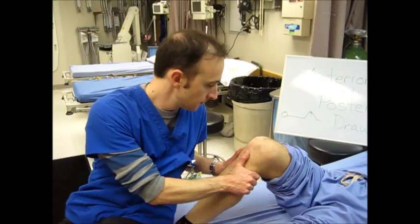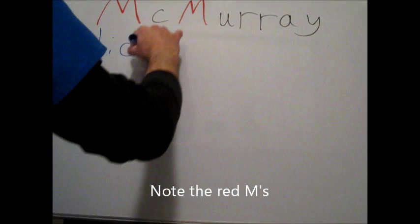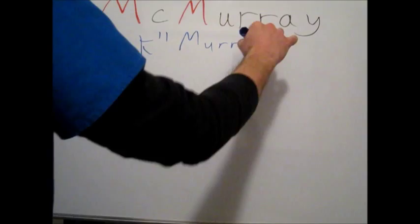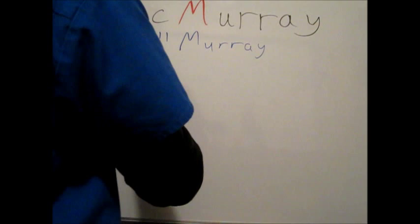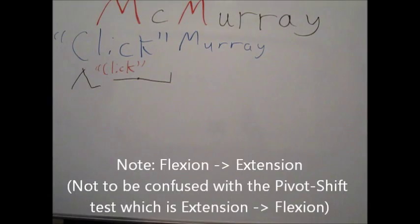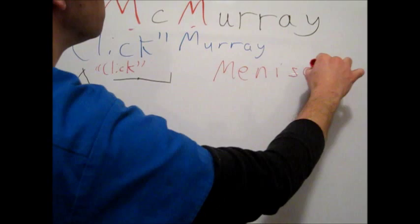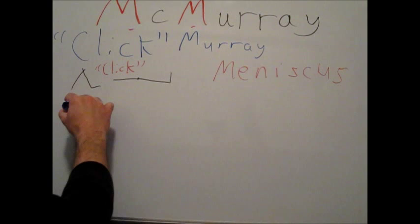The next test is the McMurray test, which I like to think of as the Click Murray test. Because as you go from flexion at the knee to extension at the knee, one of the things that you're looking for, besides pain, is the Click. Now, the other thing about the McMurray is that it tests for damage to the meniscus of the knee, the cartilage. Specifically, with the medial meniscus, you can think of the acronym MEL.